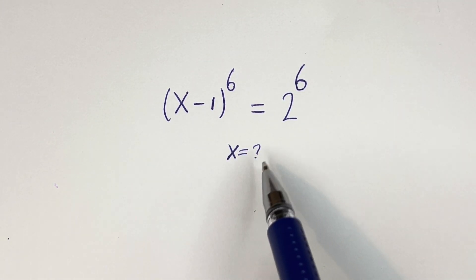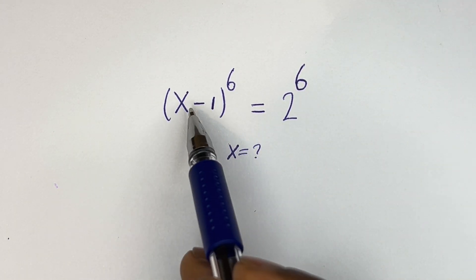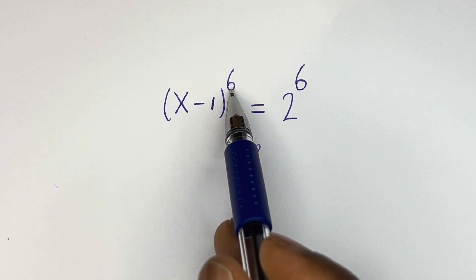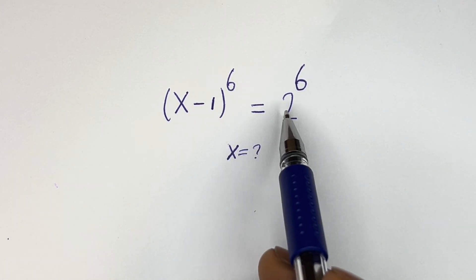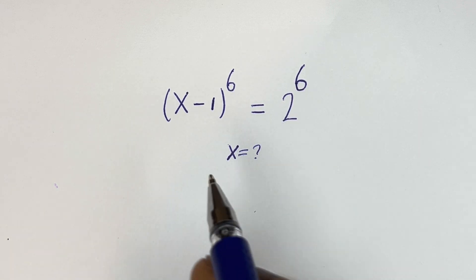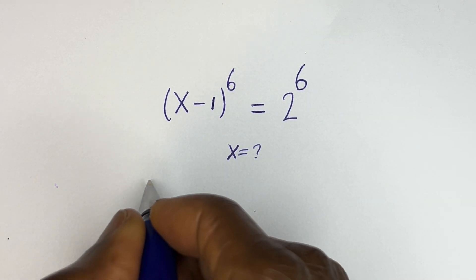Hello. How to solve for x in this equation: x minus 1 to the power of 6 is equal to 2 to the power of 6.